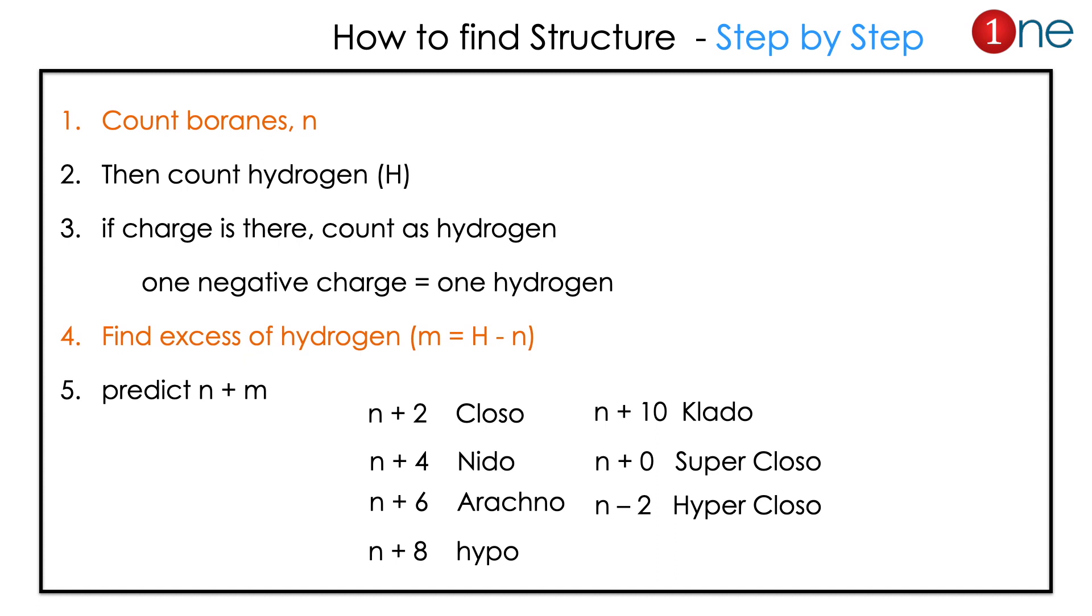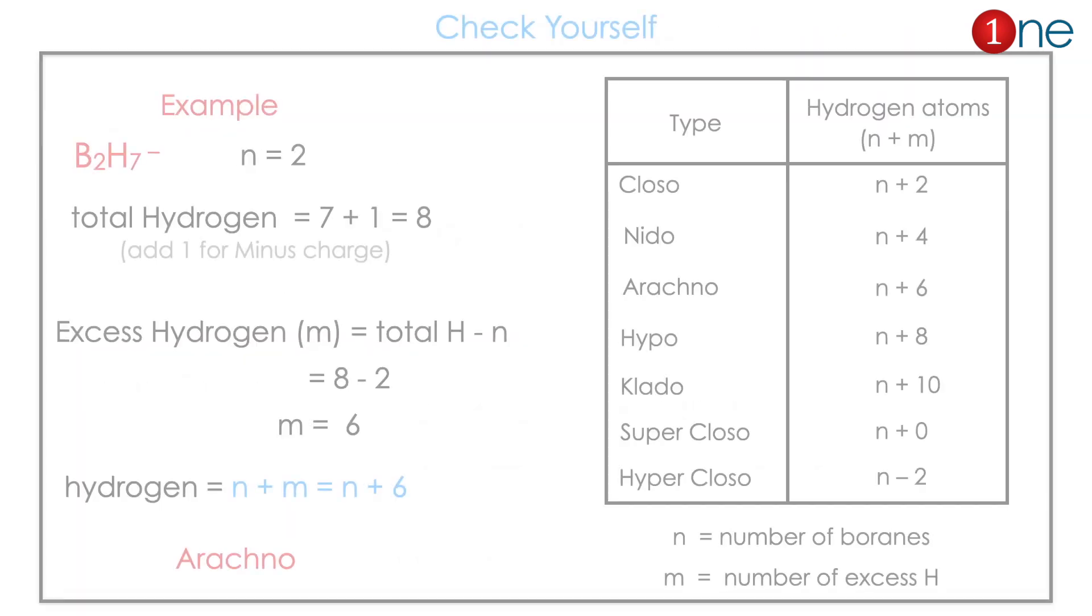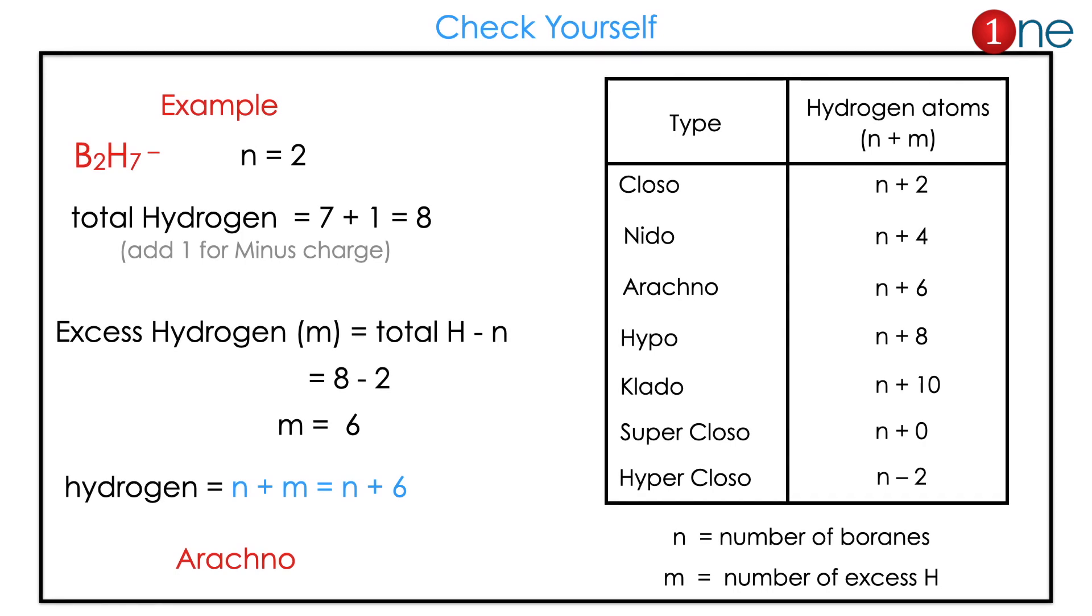From n + m we will find the structure. You will learn by example. Check yourself here. The example is B₂H₇⁻ where n = 2, which is the number of borons. Total hydrogen is 7, and for the negative charge you count one more, so 8. If you calculate m, which is 8 - 2 = 6, so n + m = n + 6, which is arachno.